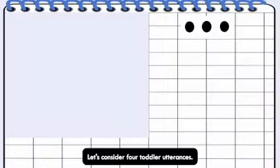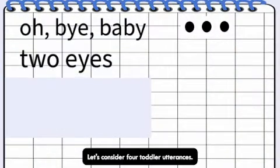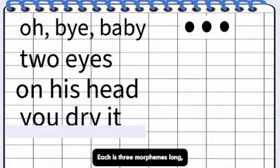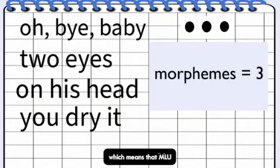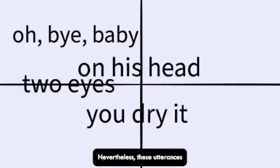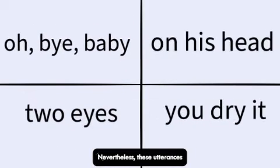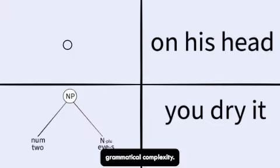Let's consider four toddler utterances. Each is three morphemes long, which means that MLU will treat them as equivalent. Nevertheless, these utterances differ dramatically in grammatical complexity.